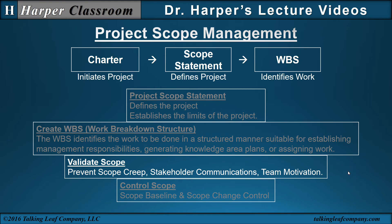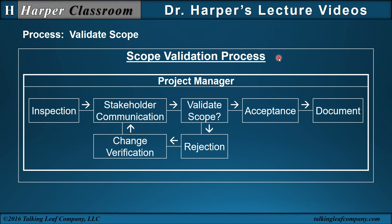Let's look at validate scope. In the scope validation process, the project manager will periodically have an inspection of the scope, which can include an audit, analysis, and a report to the stakeholder through a communication plan. The stakeholder goes through a validation process: if they accept the scope, it's documented; if they reject, it goes through change management. The change is verified and it goes back to the stakeholder, and the process is repeated.